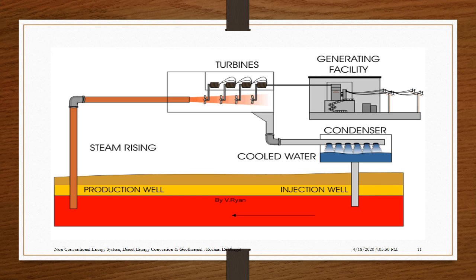The animation shows the geothermal power plant. Hot steam coming out from the production well passes through the turbine, which is coupled to a generator for generating electricity. A condenser condenses the steam coming out of the turbine. The condensed steam, now water, is sent back to the earth through the injection well.